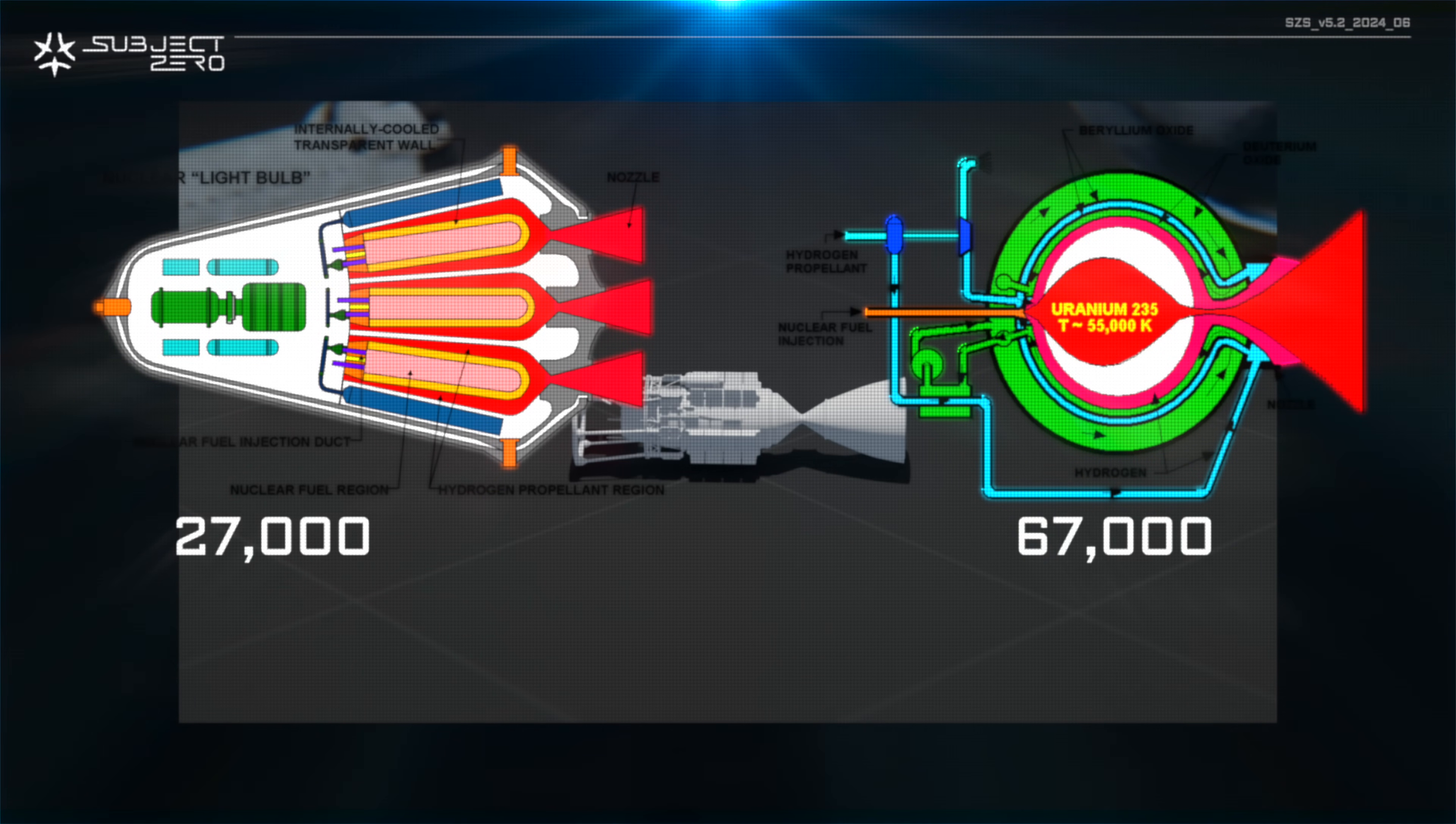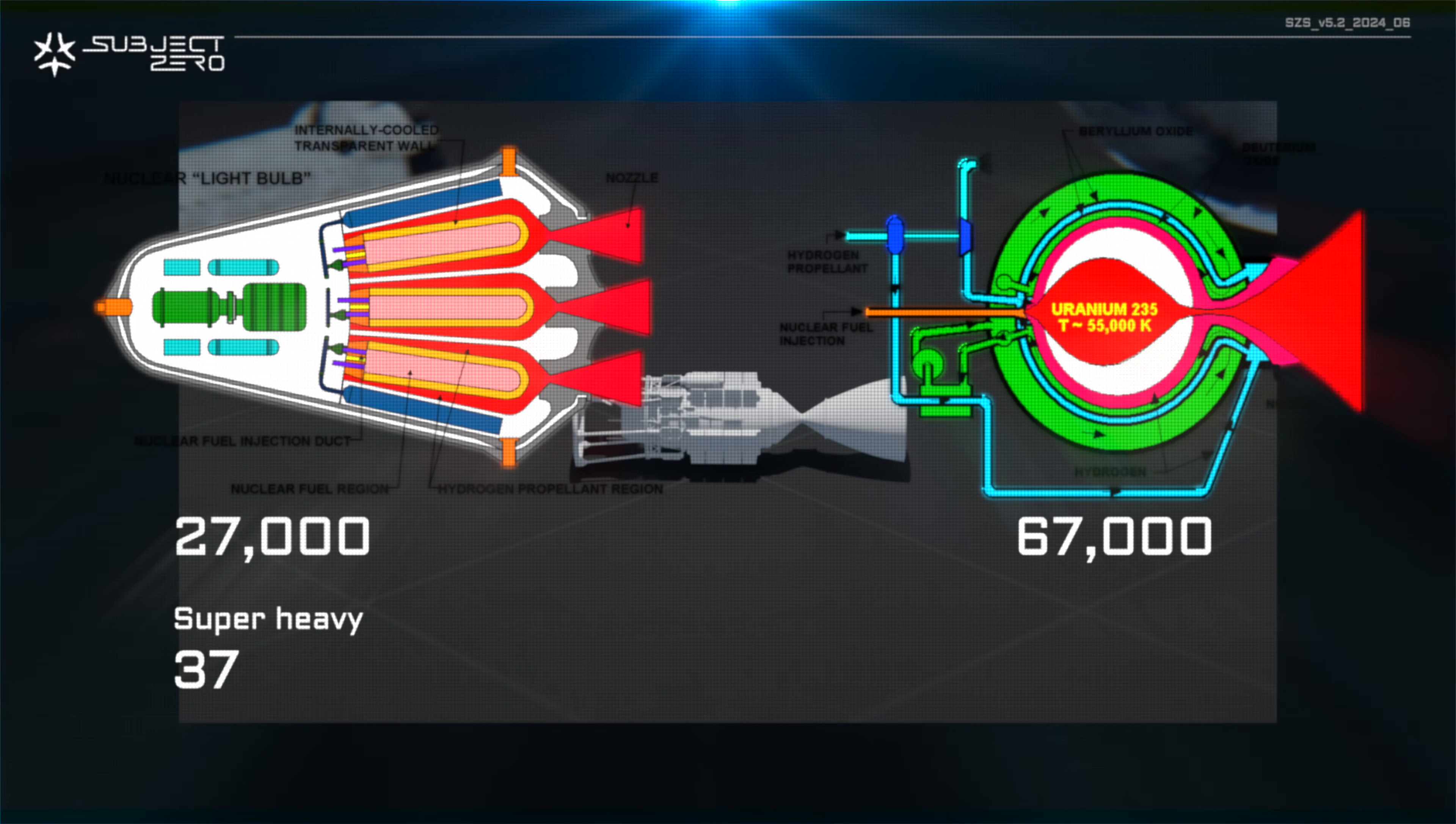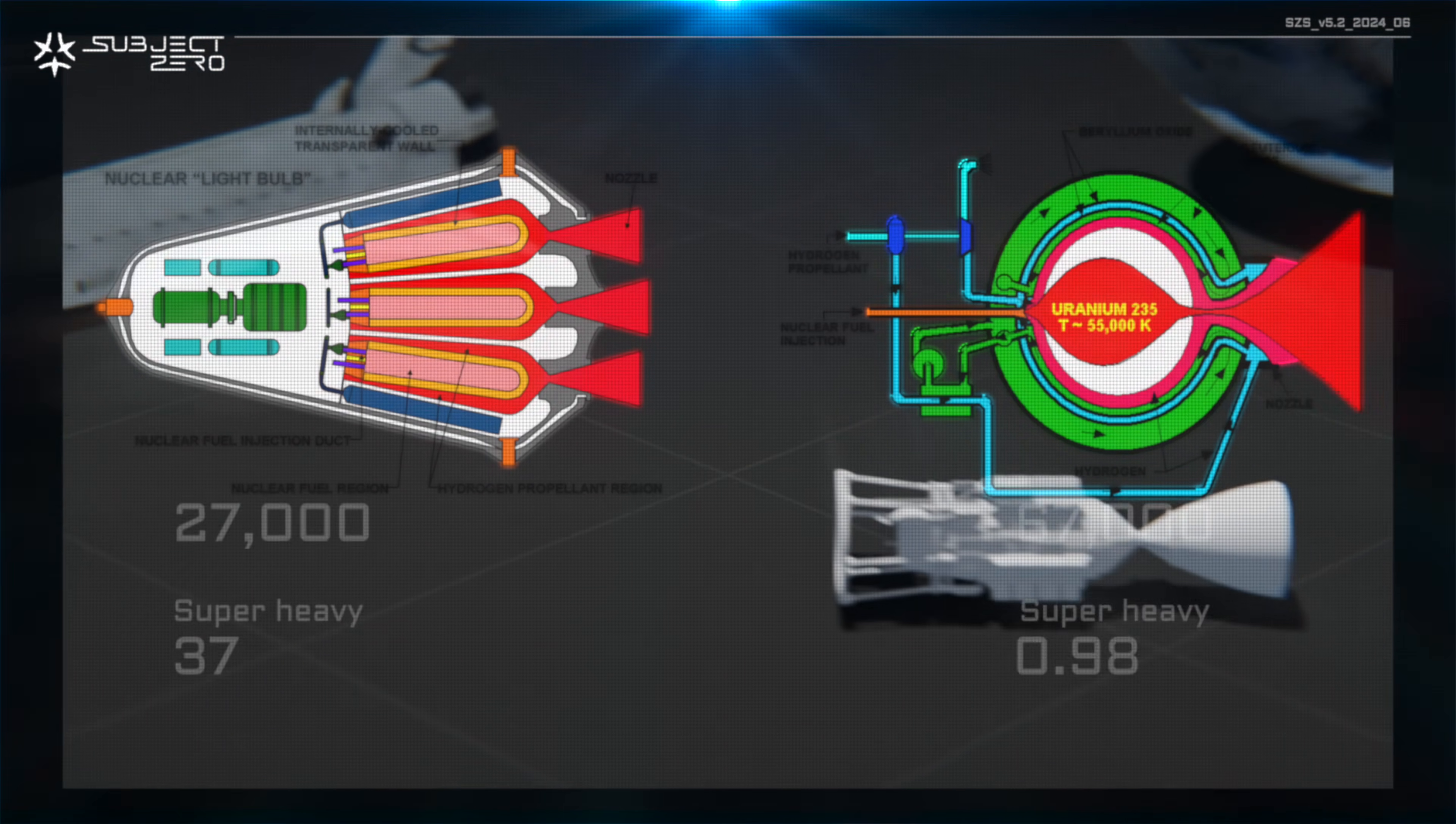A molten core engine with a theoretical specific impulse of 27,000 cuts fuel requirement from 10 million Starships to 37. Gaseous core, 67,000 ISP, less than one Starship.